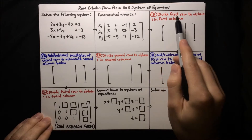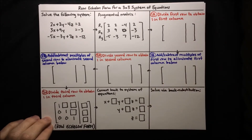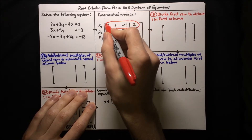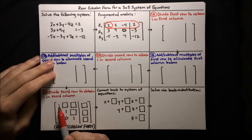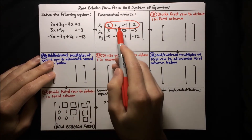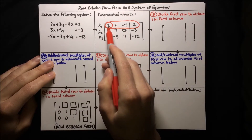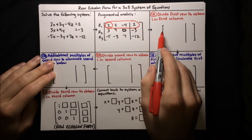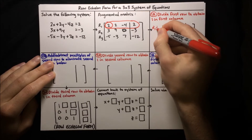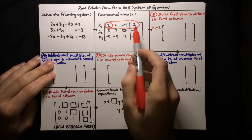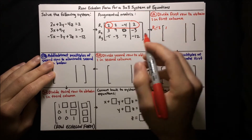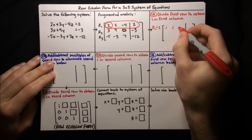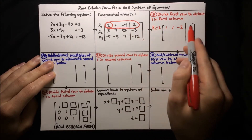Our first step is to divide the first row to obtain a 1 in the first column. Right now we have a 2 in the first column, but in row echelon form we want that to be a 1. So we'll divide the entire row by 2. So row 1 divided by 2: 2 divided by 2 is 1, then 2 divided by 2 is 1 again, then negative 4 divided by 2 is negative 2, and 2 divided by 2 is 1.